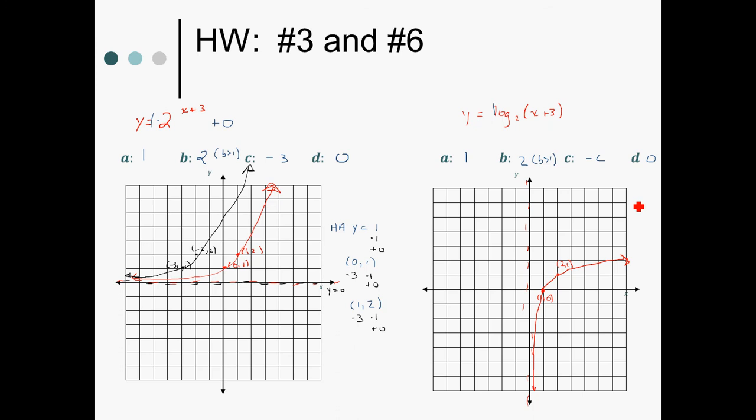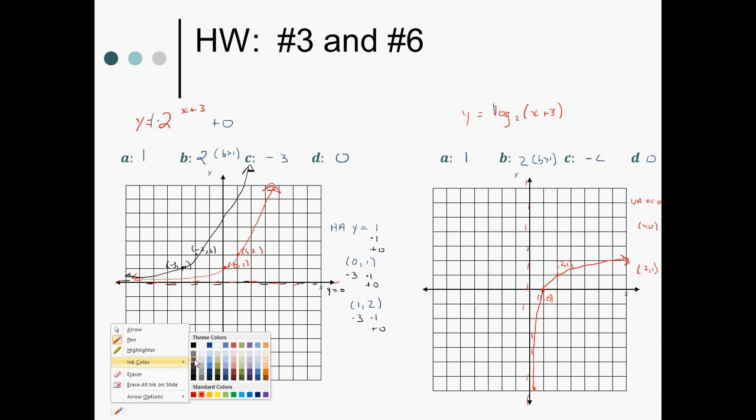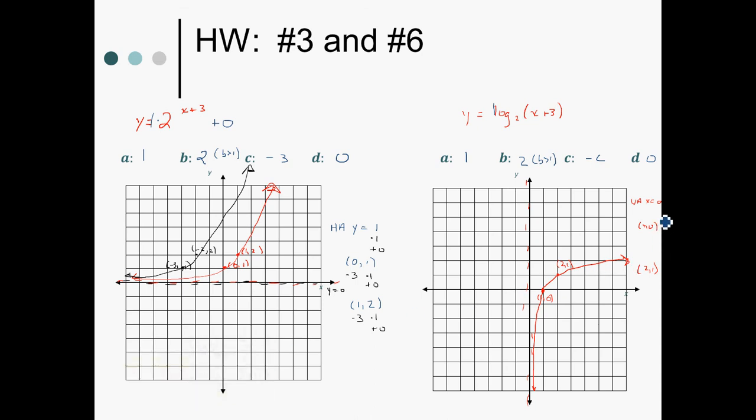The points I have are the vertical asymptote at x equals zero, the point one zero, and the point two one. And now I'm going to use all my transformations on them. So I'm going to shift three from every x, including the asymptote. It's an x thing. So you have to shift it by negative three units. And then my y, nothing happened to my y. Multiplying by one and adding zero.